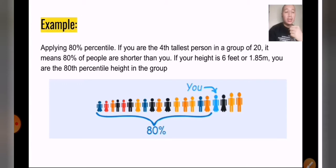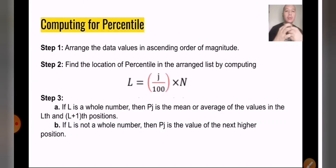How do we compute for percentile? First, the step one is we have to arrange the data values in an ascending order of magnitude, meaning just like what we have covered in the last chapter, we have to arrange it in an ascending order or in a particular order.